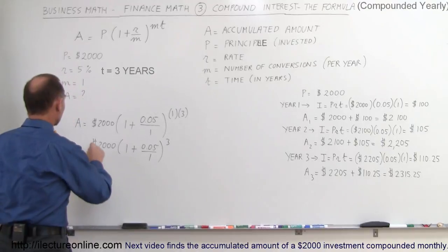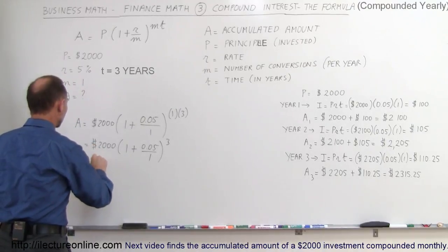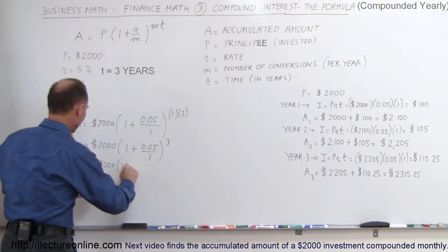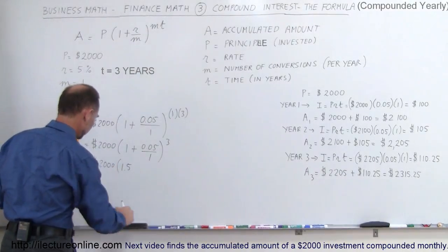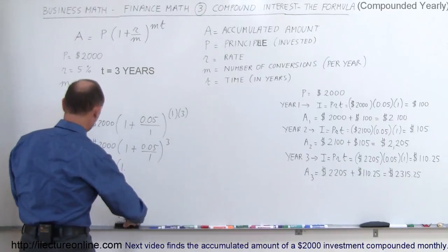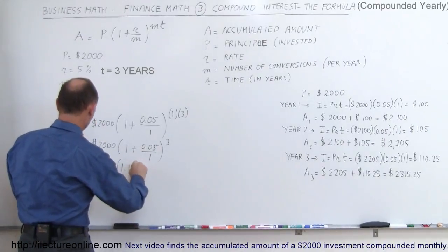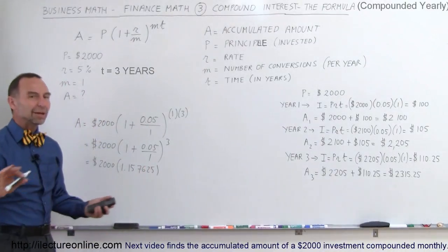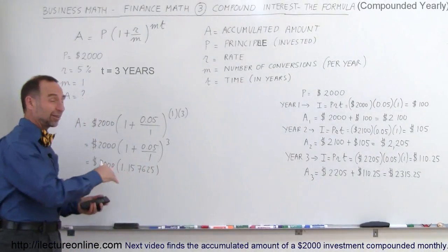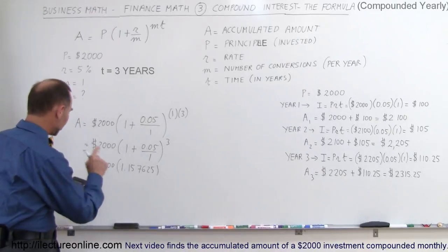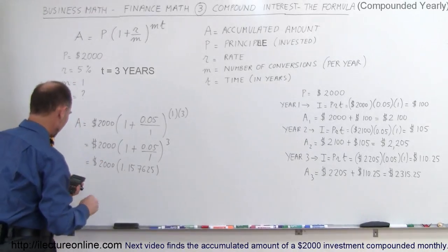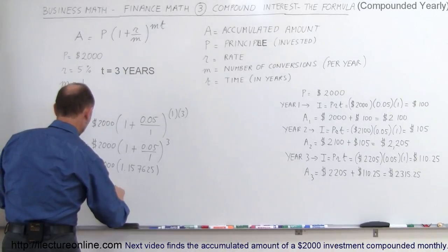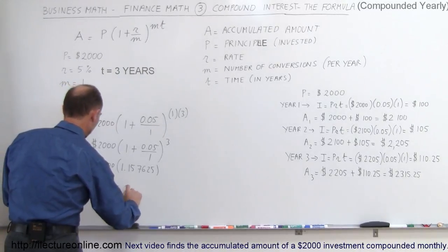and then you multiply that times 2,000. Let me show you the intermediate value. This should be equal to 2,000 times 1.157625. We don't need that many significant figures; when it comes down to less than a penny, you don't really care. But you multiply that times 2,000, and you should get $2,315.25,